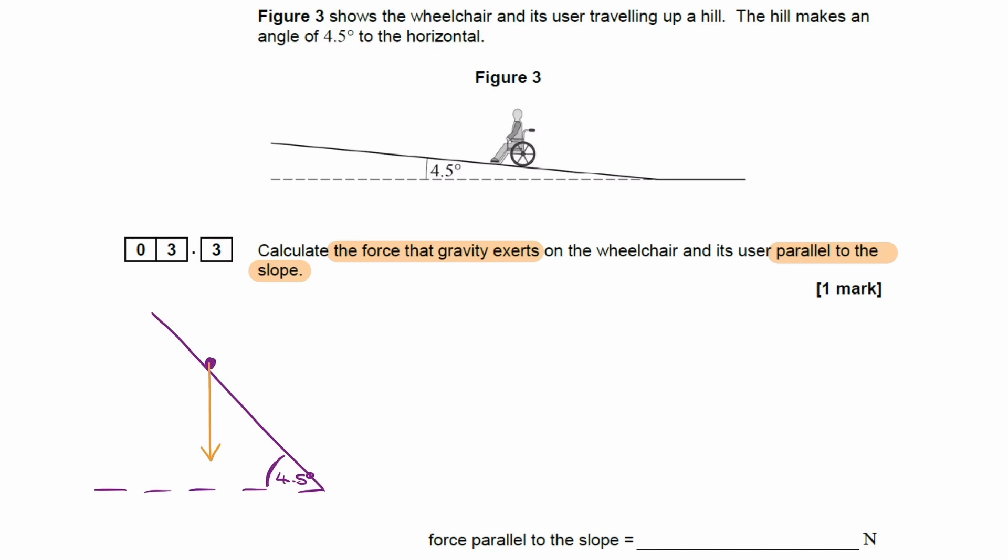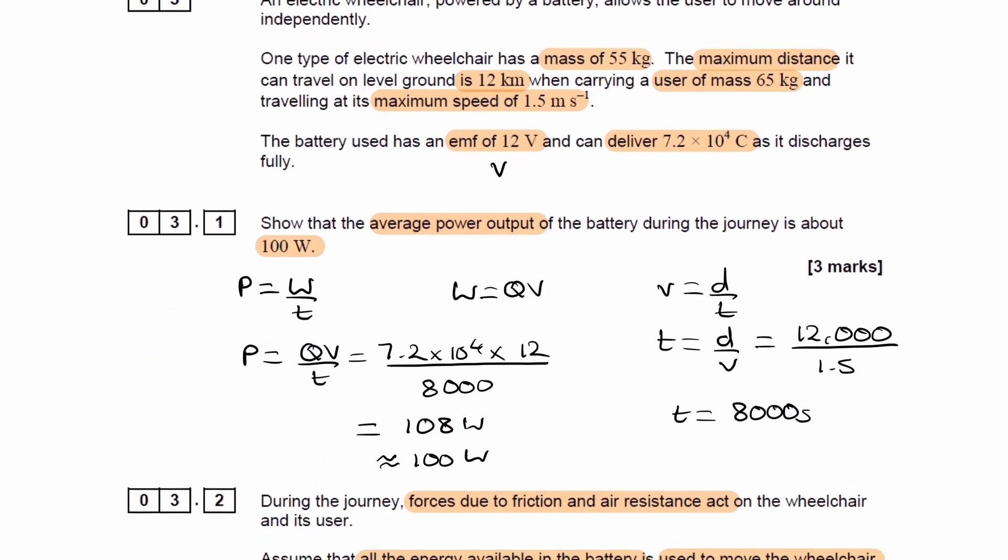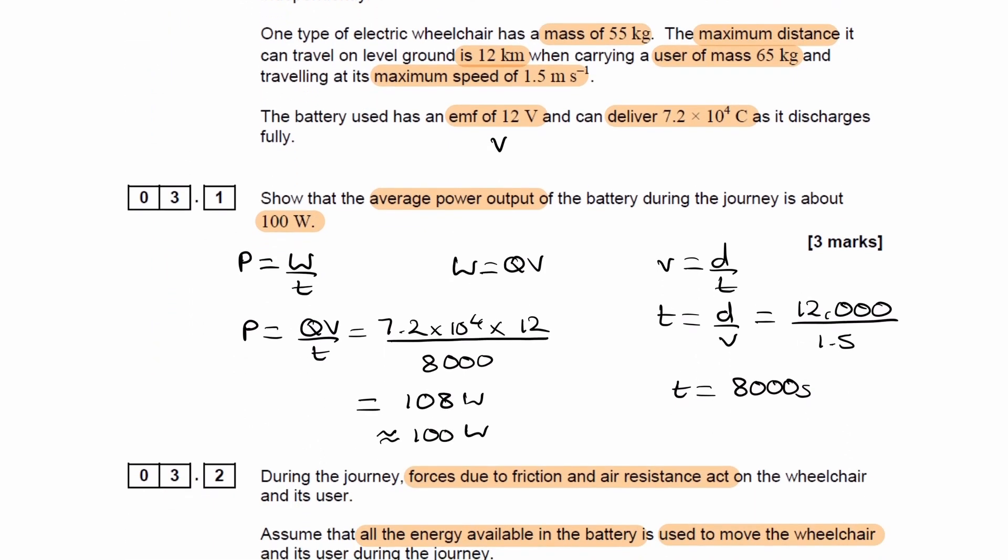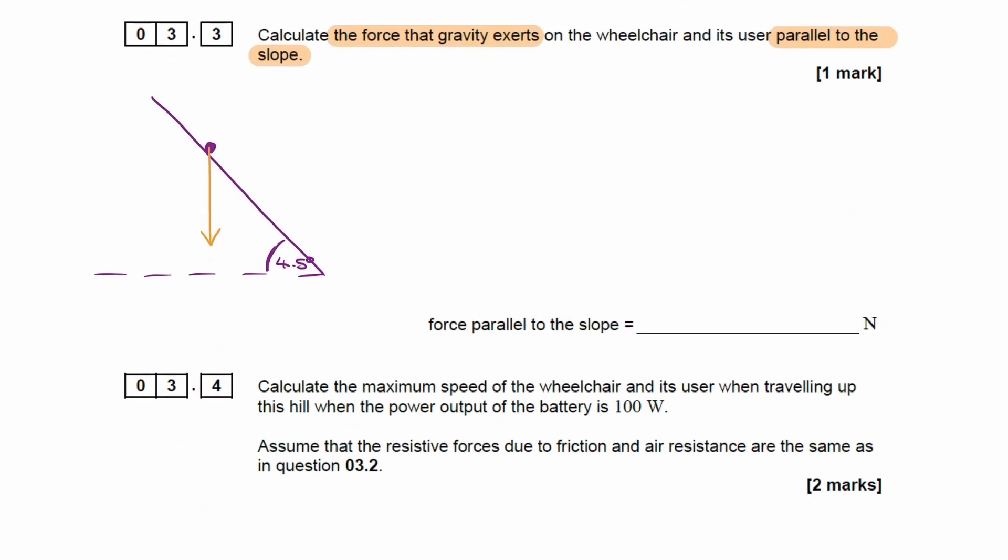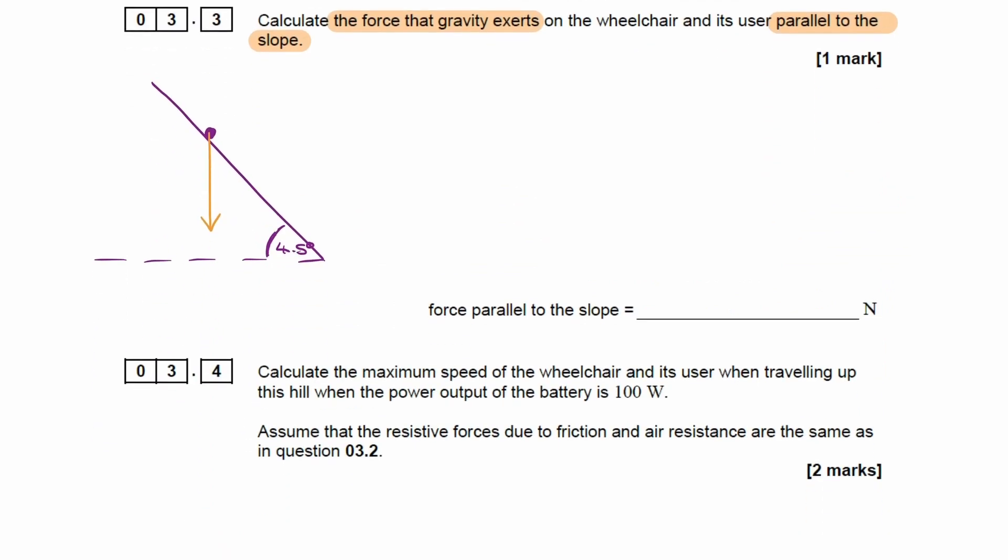We're told the masses in the previous part. The wheelchair is 55 kilograms, and the user is 65 kilograms. Add the two things up: 55 plus 65 gives us 120. So the downward weight force would be 120g.